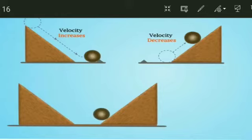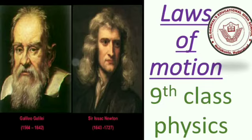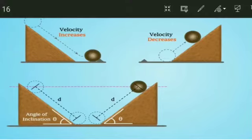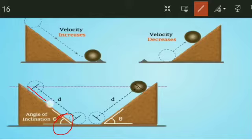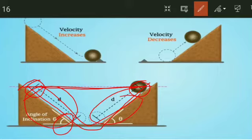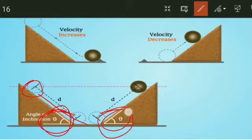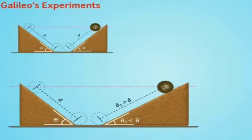This is the experiment done by Galileo Galilei. He observed that it depends on the angle of inclination. If the angle of inclination is decreased, the ball still reaches the exact same height on the other side, as long as the surfaces are smooth and friction is minimal. When both angles of inclination are the same, the ball reaches the same height on the other side.